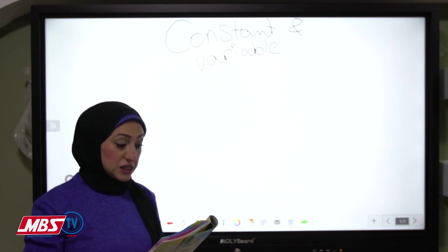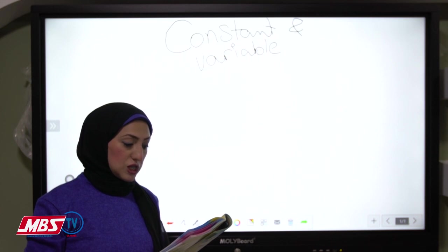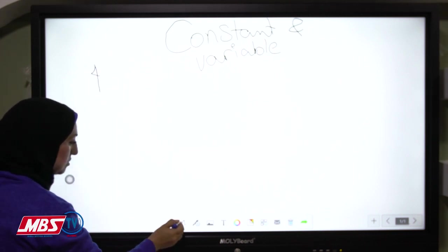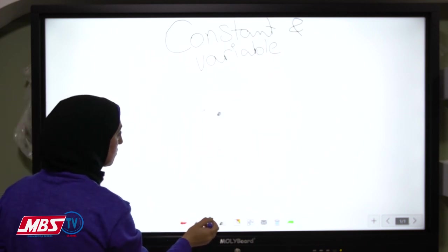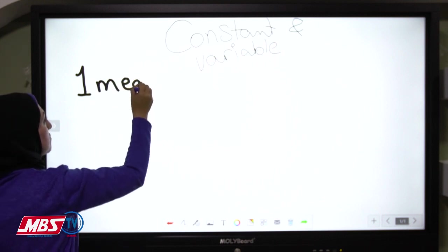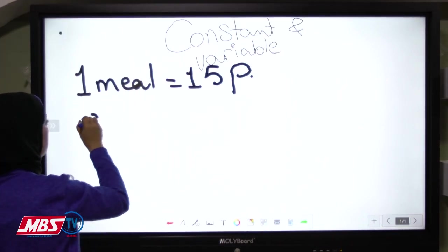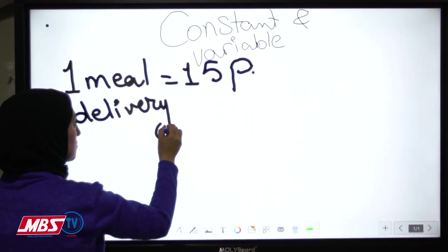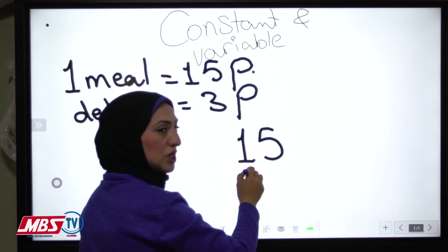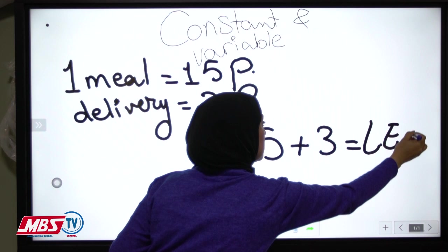In your book, in the practice: the price of a meal in a restaurant is 15 pounds and 3 pounds are added for delivery service. It doesn't matter how many meals. One meal equals 15 pounds, and the delivery price equals 3 pounds. So 15 plus 3 equals 18 pounds.